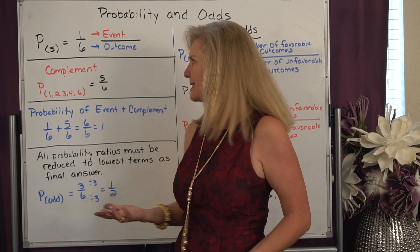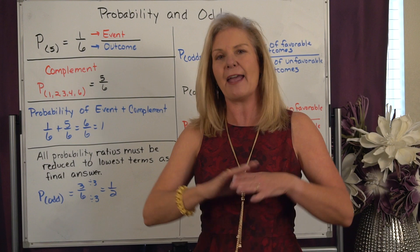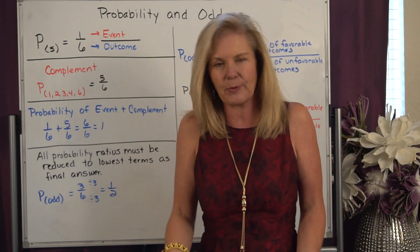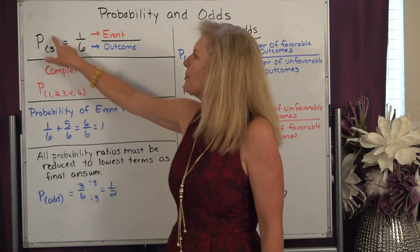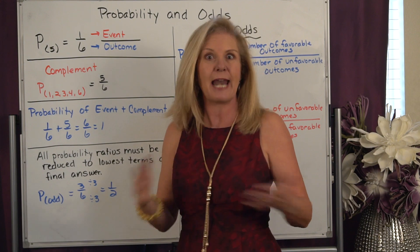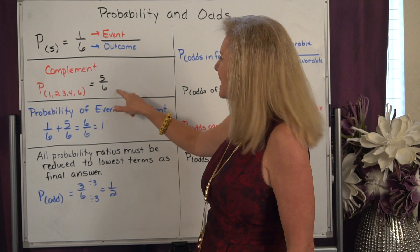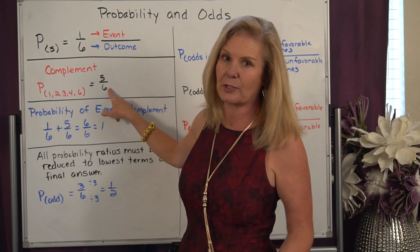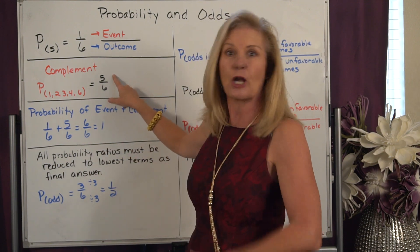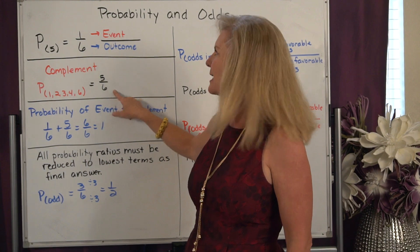Now we also have something called a complement. Every probability ratio has a complement. It's the opposite of what we want to have happen. So the complement of rolling a 5 would be all the ways we could roll numbers that are not 5. So how do we roll a 1, 2, 3, 4, or 6? Well still I have six ways that I can roll numbers because there's only six sides to the number cube. But how many of those ways are not 5? Well, five out of the six ways.